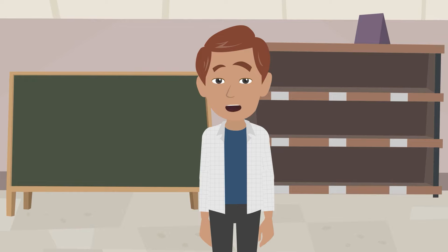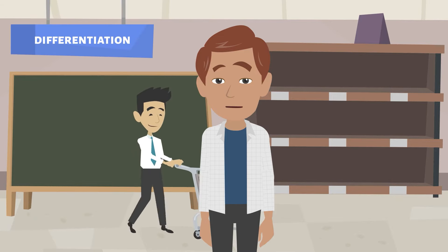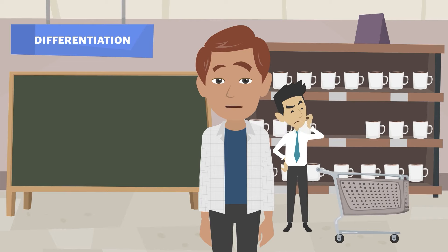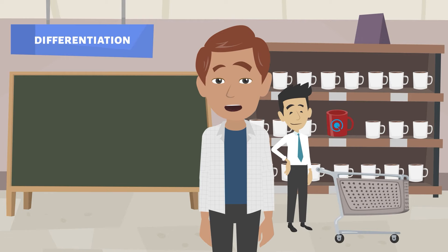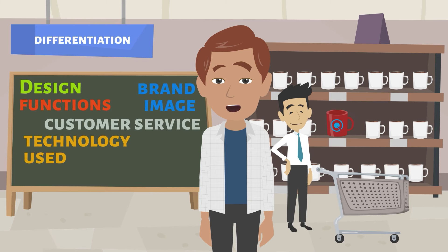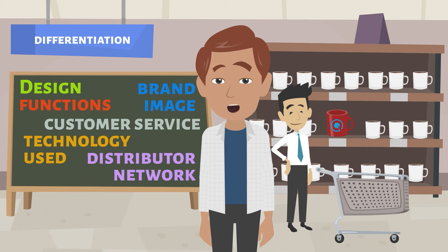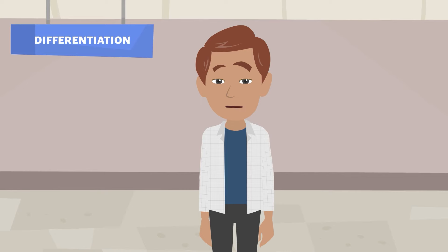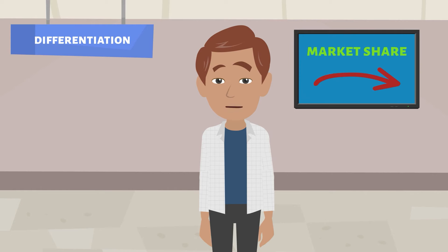Another strategy described by Michael Porter is differentiation. Differentiation is based on the production of products or services that would be perceived as unique in the industry. Differentiation can take various forms, for example a distinctive design or brand image, functions, technology used, customer service or distributor network. However, the best results are achieved by implementing differentiation in several areas. Contrary to cost leadership, differentiation usually doesn't contribute to attaining a high market share because it is associated with the exclusivity of products or services.